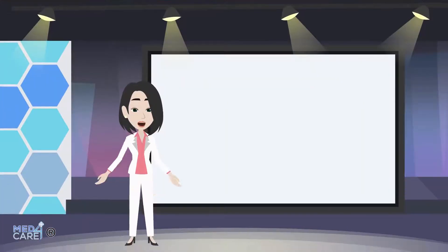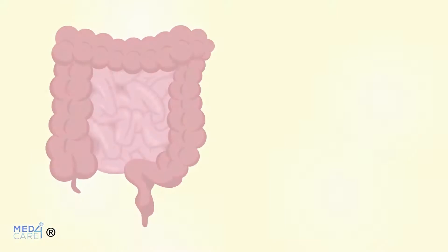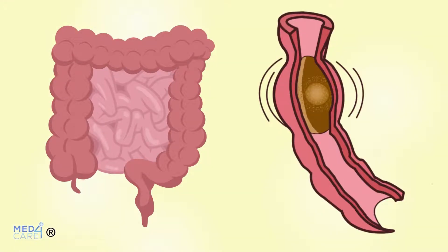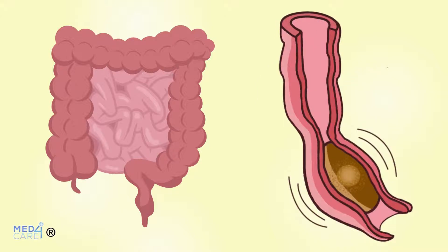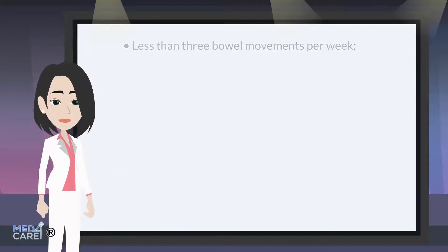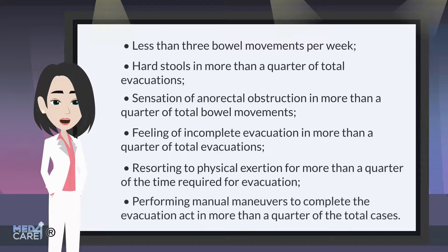In particular, in the case of functional constipation — that is when the peristaltic movement of the food content tends to slow down due to non-organic causes, a mechanical obstruction of the intestinal viscera, or to factors not well identified — the diagnosis hinges on the so-called Rome Criteria 4. Functional constipation is diagnosed if at least two of the following criteria are met for at least three months during a semester.